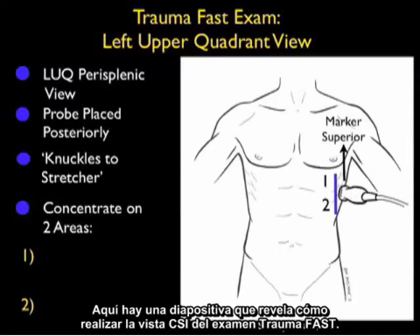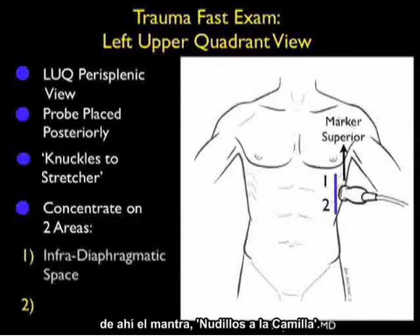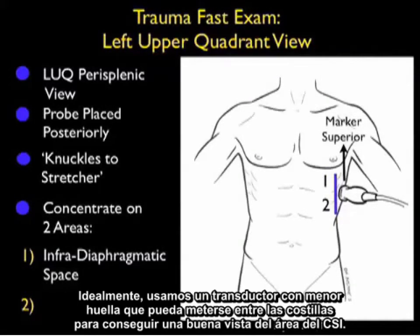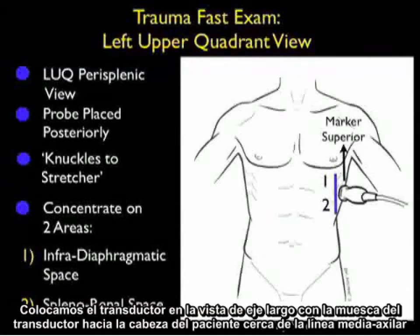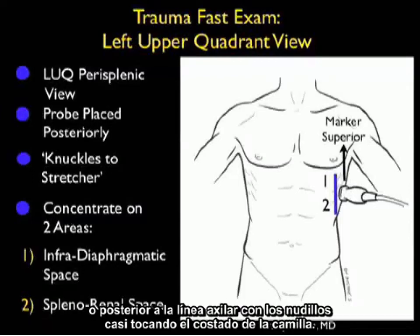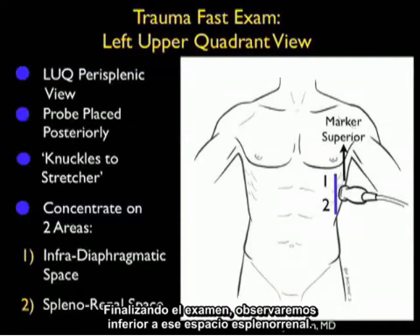Here's a slide reviewing how to perform the left upper quadrant view of the trauma fast exam. As the spleen offers less of an acoustic window on the left upper quadrant, we need to bring the probe in from a more posterior position — thus the mantra 'knuckles to stretcher.' Optimally we're using a smaller footprint probe between the ribs. Position the probe in the long axis view with the probe marker towards the patient's head at about the mid or posterior axillary line, with knuckles almost touching the bedside. We'll concentrate on the area above the spleen and below the diaphragm where fluid will preferentially accumulate, and also look inferiorly at the splenorenal space.